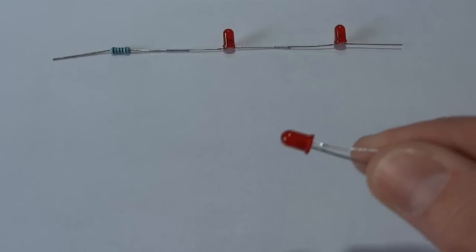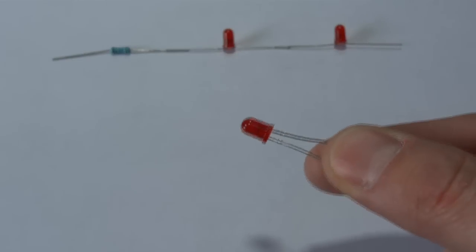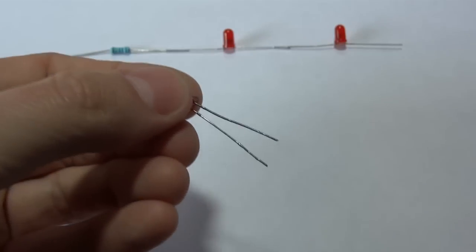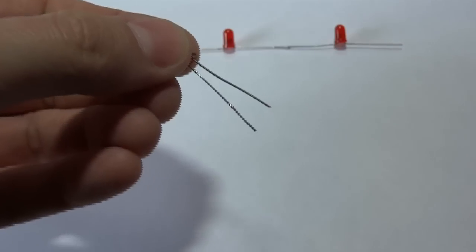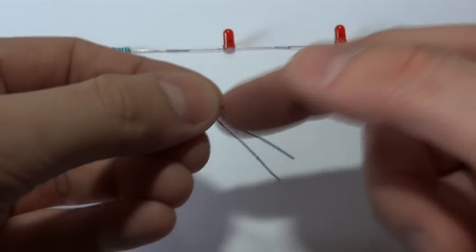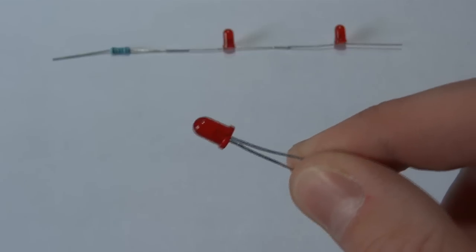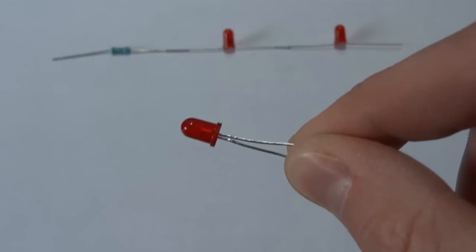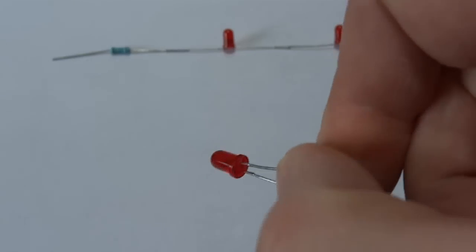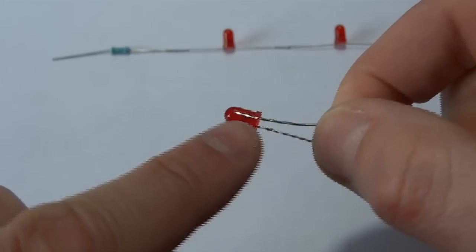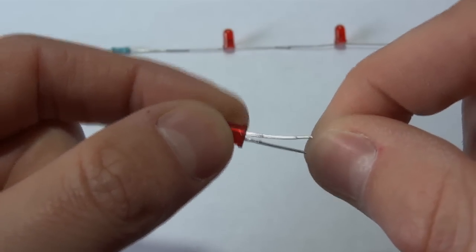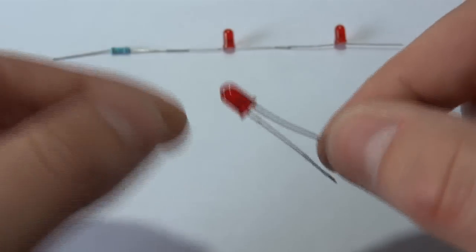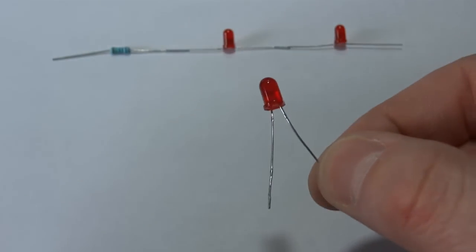I probably should have mentioned that LEDs have to be wired the correct way around, so you'll find that one leg is shorter, and that's the leg that must go to the negative or the lowest potential difference point in the circuit, and also that leg, there's a slight flat on the body, which is quite hard to see, but on the actual red casing it's slightly flatter on one side. You can just see it there, and that's the negative or the cathode if the other pin is the positive or the anode.